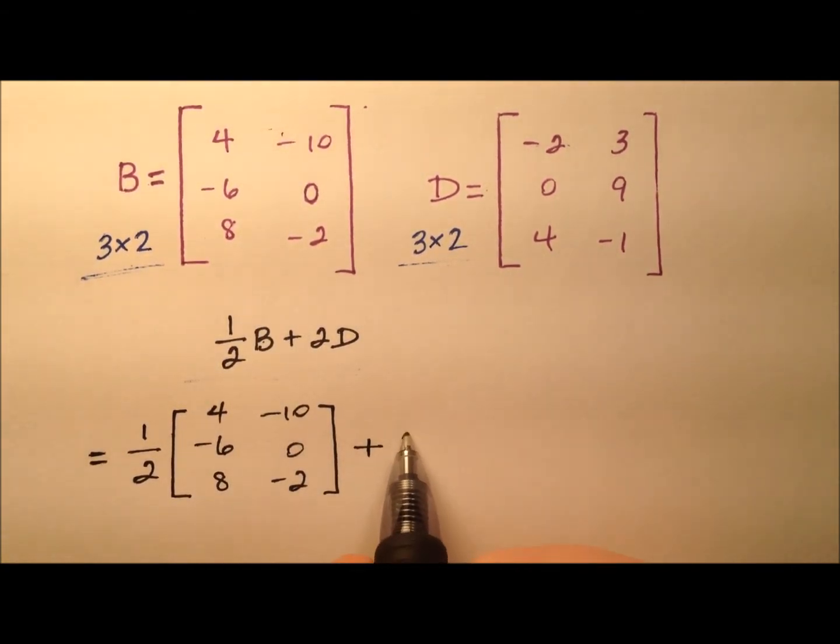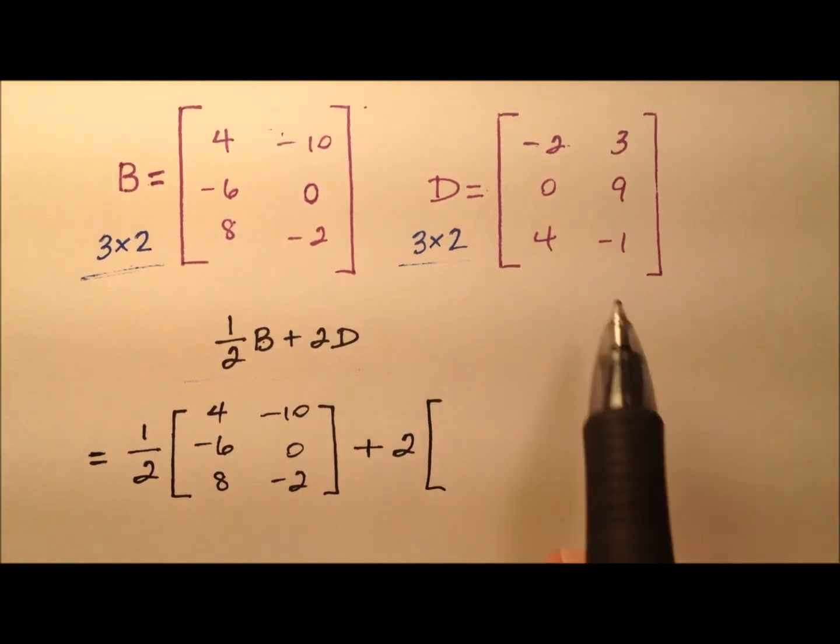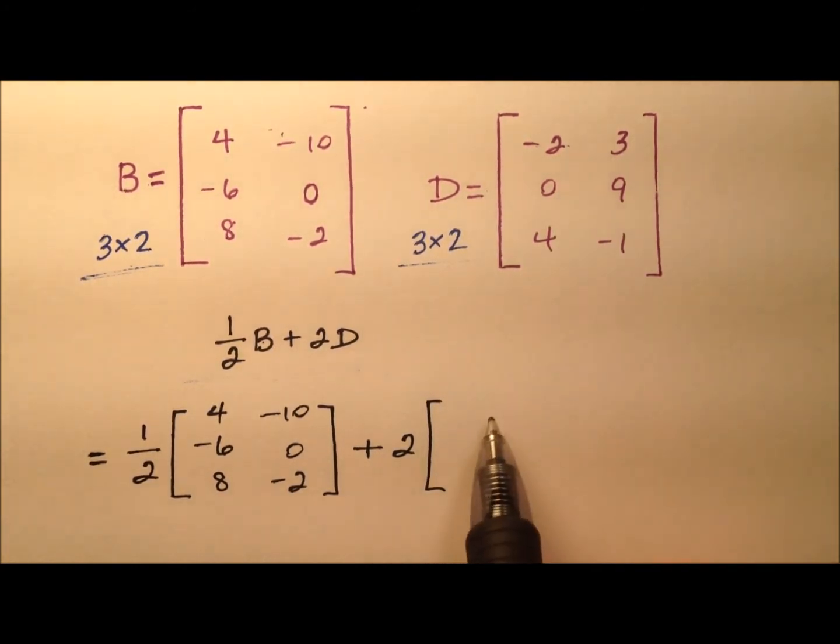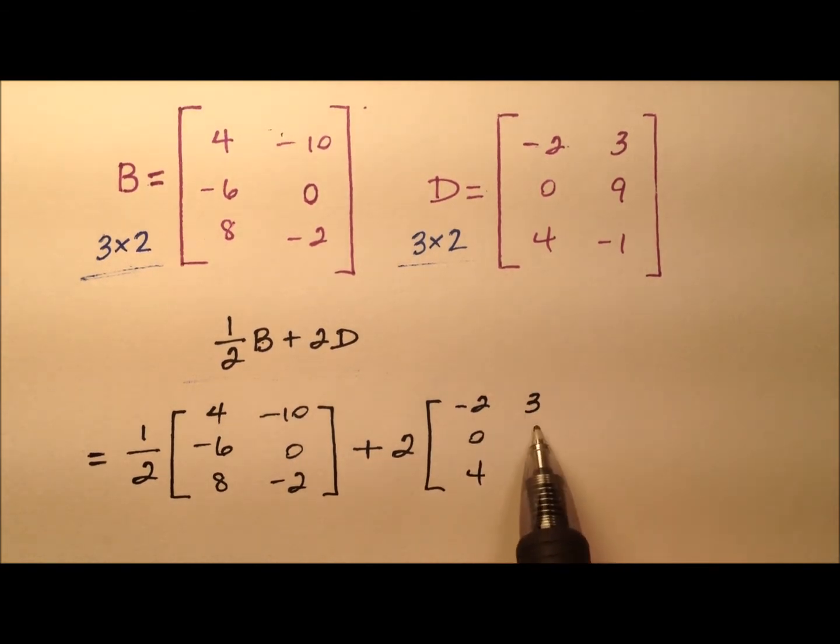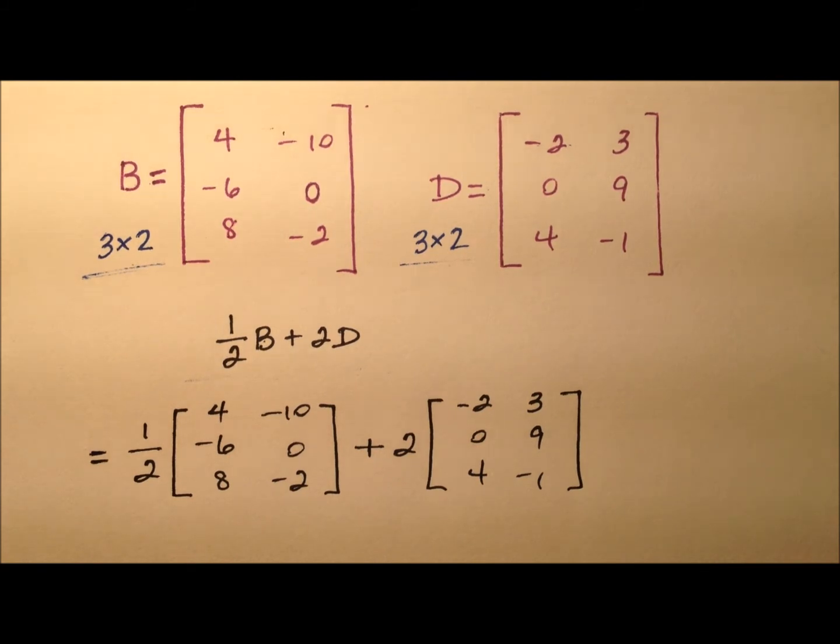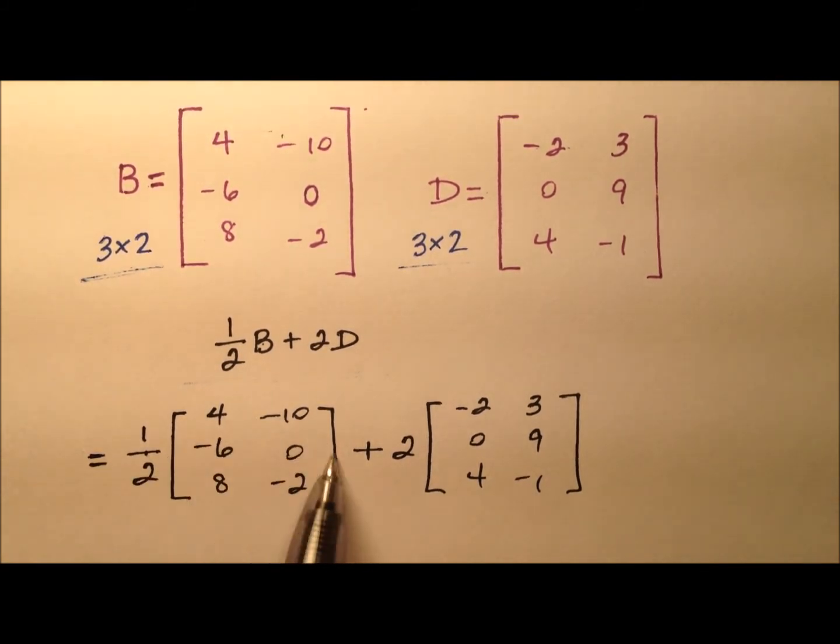And to that, we're going to add a 2, and we're going to put matrix D down here. So we have negative 2, 0, and 4, 3, 9, and negative 1. So that's exactly what that's going to look like. So it's half of matrix B and twice matrix D.